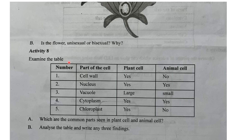Examine the table. What are the common parts seen in plant cells and animal cells? Plant cells and animal cells have common parts: nucleus, cell membrane, and cytoplasm.